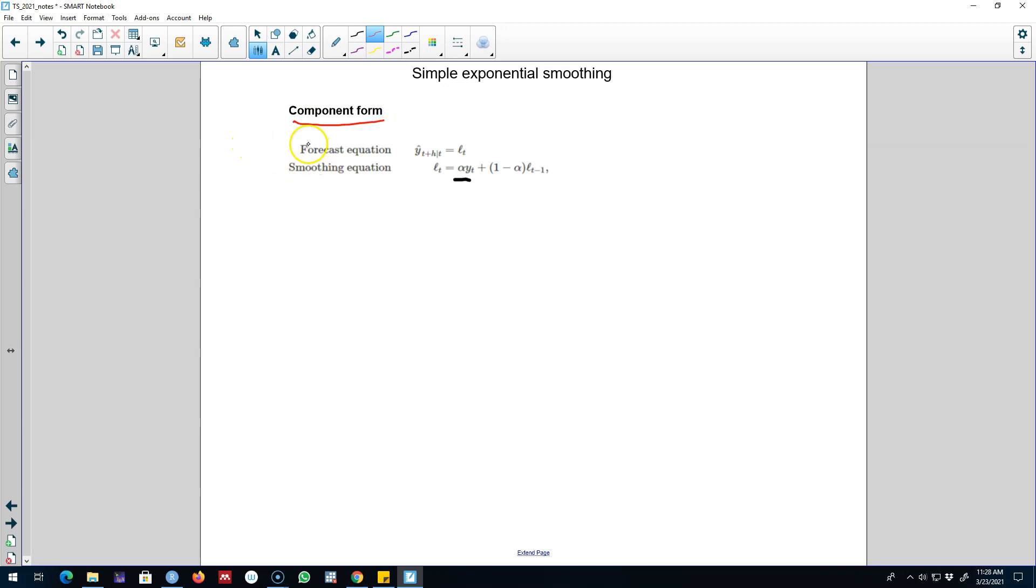We'll have two equations: one equation is called the forecast equation and the other equation is called the smoothing equation. Our forecast will depend on lt, which is the level, and then we have our smoothing equation where level depends on the previous level, that is whatever level was in time t minus 1 and the value of alpha. Hence here we have two unknowns to estimate: l and alpha.